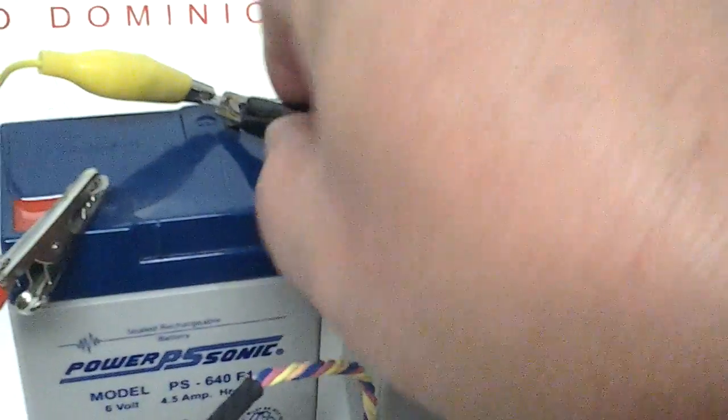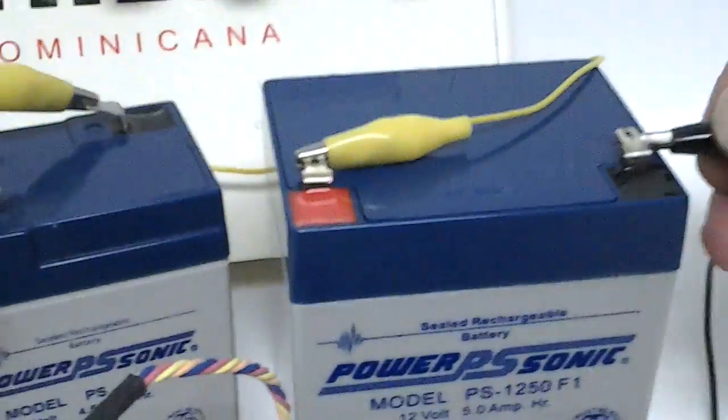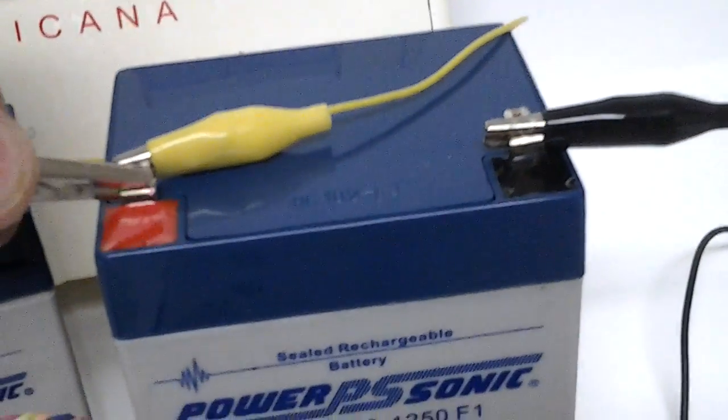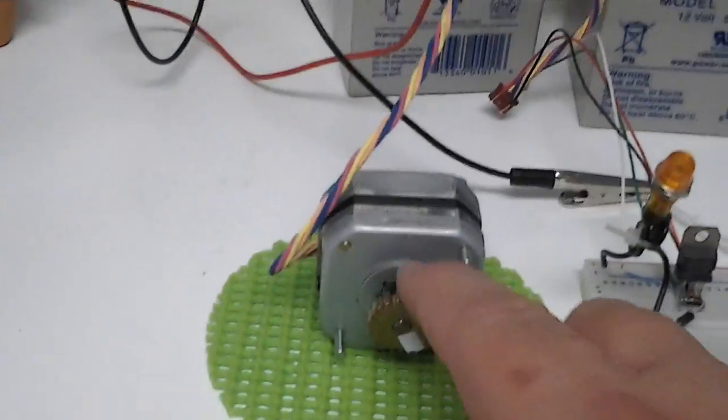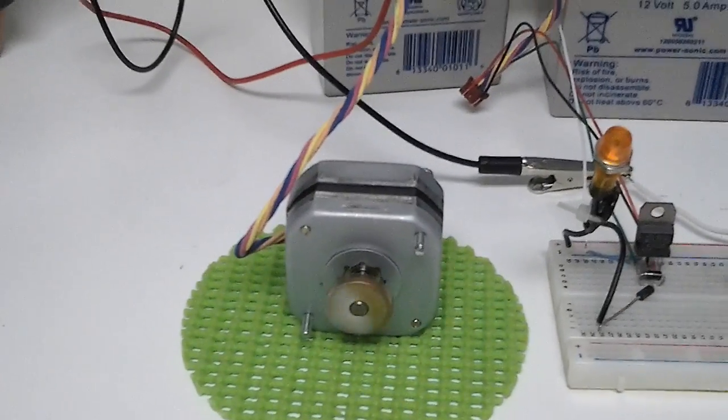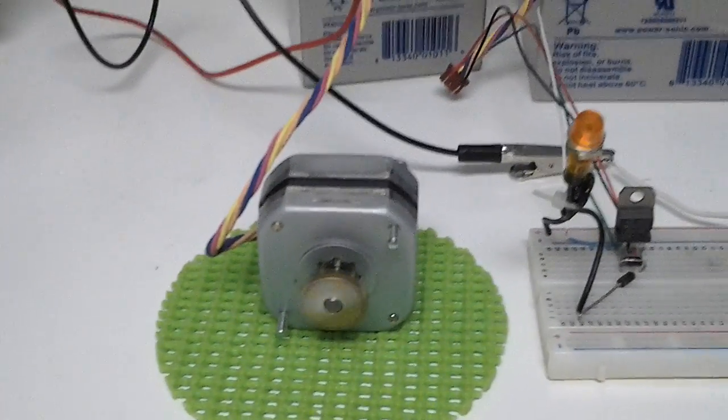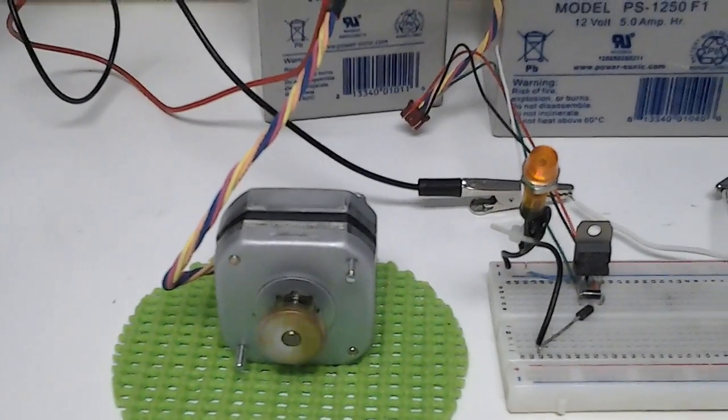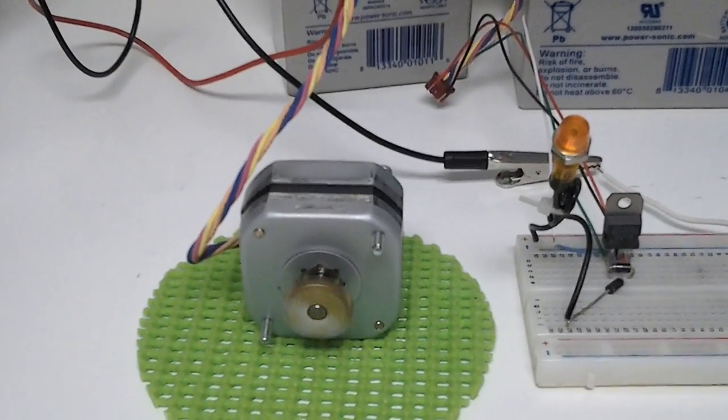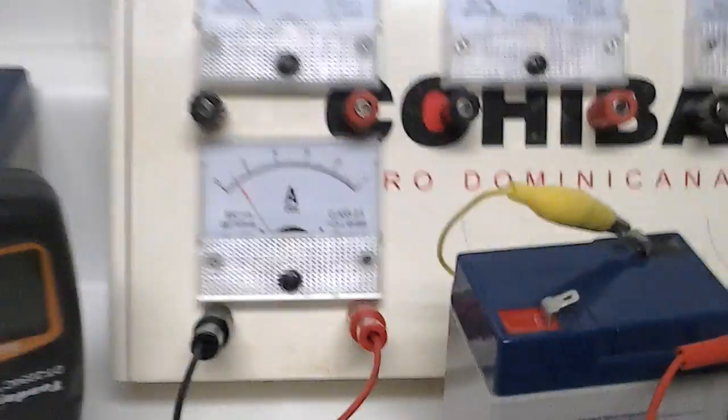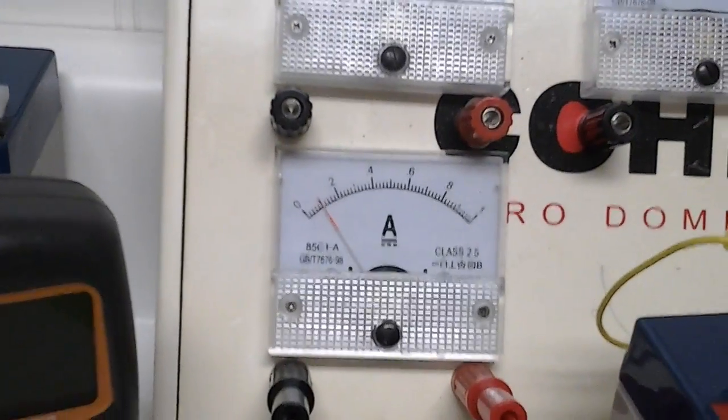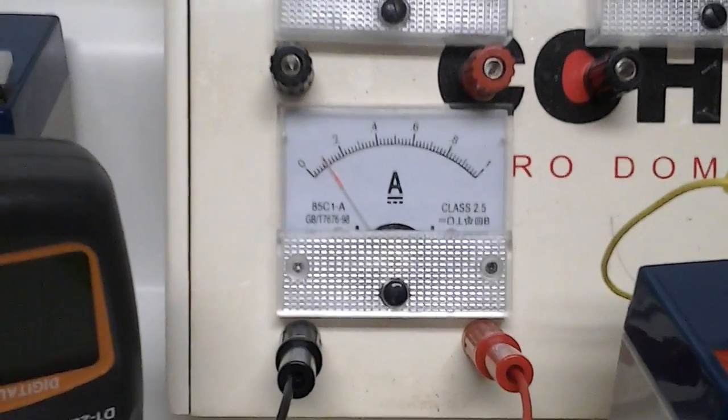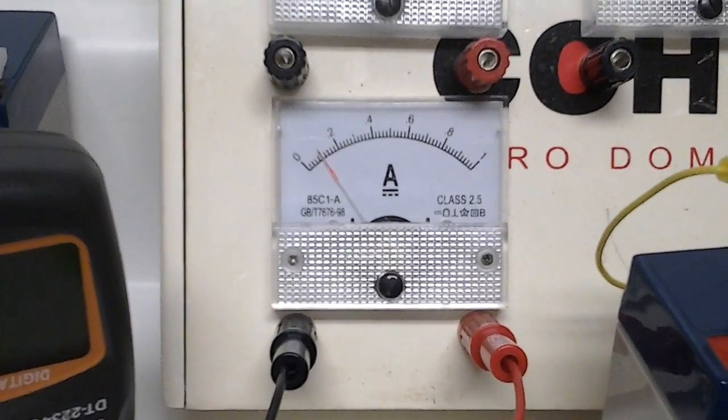Now let's swap this over to 12 volts. Excuse me here, this is kind of clumsy. Okay, the motor stopped, so we'll give it a little spin to start. There, it's running at 12 volts at 1368 RPM.